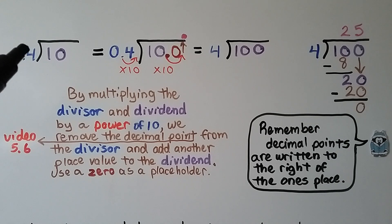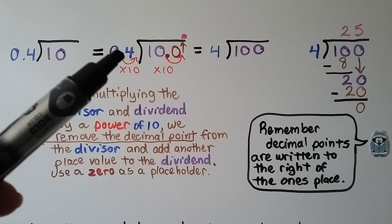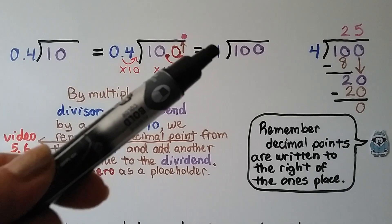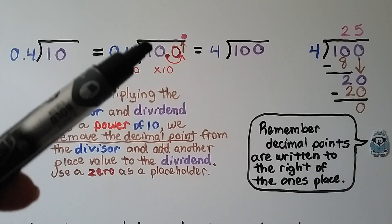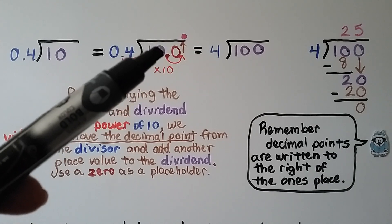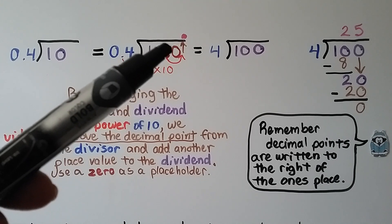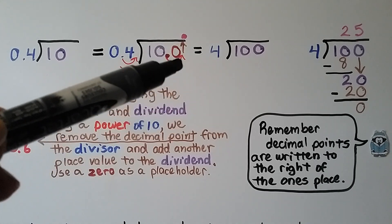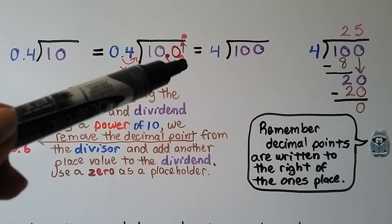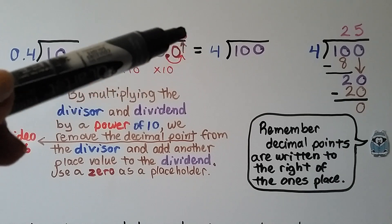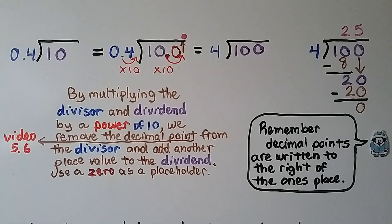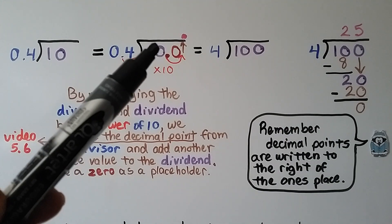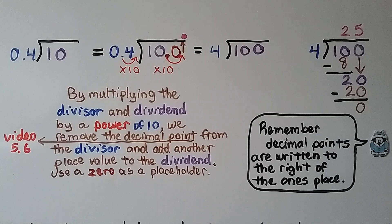Here we have 10 divided by 4 tenths. We can multiply 4 tenths by 10 to turn it into a whole number, but that means we're going to be forced to multiply the dividend by 10 as well. That moves it one decimal hop to the right, so we'll have to put a zero as a placeholder. The decimal point's new position in the quotient goes directly above the new decimal place. We end up with 4 as a whole number and 100 as our dividend — 100 divided by 4. By multiplying the divisor and dividend by a power of 10, we remove the decimal point from the divisor and add another place value to the dividend, using a zero as a placeholder.